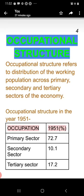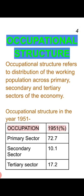Now if we talk about the occupational structure — the distribution of the working population among the primary, secondary, and tertiary sectors. On the eve of independence, nearly 72.7% of people were engaged in the primary sector, 10.1% were engaged in the secondary sector, and 17.2% of people were engaged in the tertiary sector. This was the occupational structure on the eve of independence.